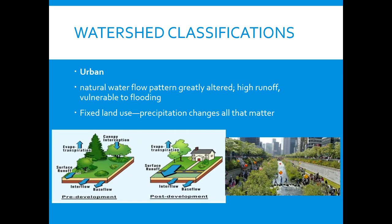An urban watershed usually prevents the natural water flow because we put roads, houses, and parking lots. This changes the ability for water to run off, which can create floods. Pre-development, water is able to be infiltrated — there's some interception by the canopy, transpiration, and evaporation, and some surface runoff. Post-development it's much harder because there's more developed land and less protection for the ground, so water has a higher amount of surface runoff because the water has to go somewhere.